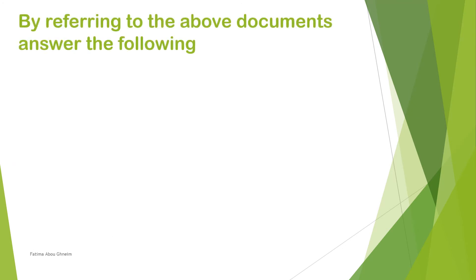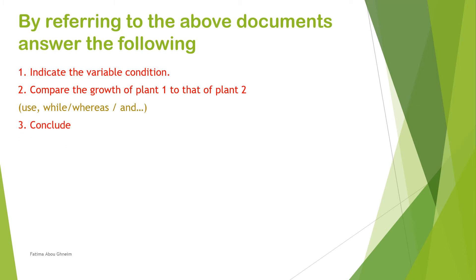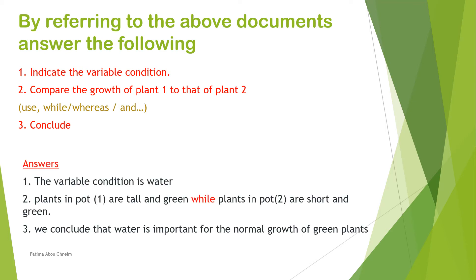By referring to the above documents, answer the following: indicate the variable condition, compare the growth of plant one to that of plant two, and then conclude. Plants in pot one are tall and green, while plants in pot two are short and yellow. We can conclude that water is important for the normal growth of green plants.